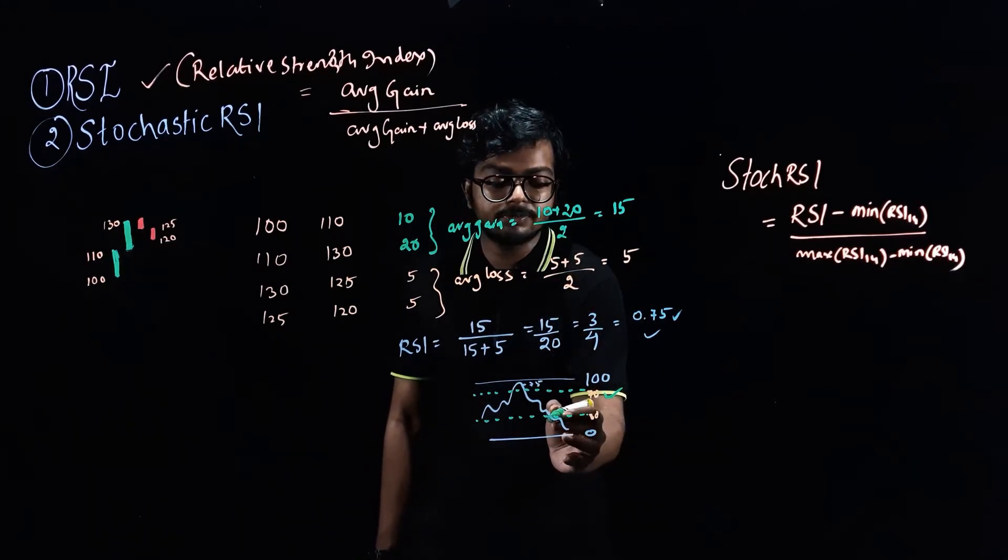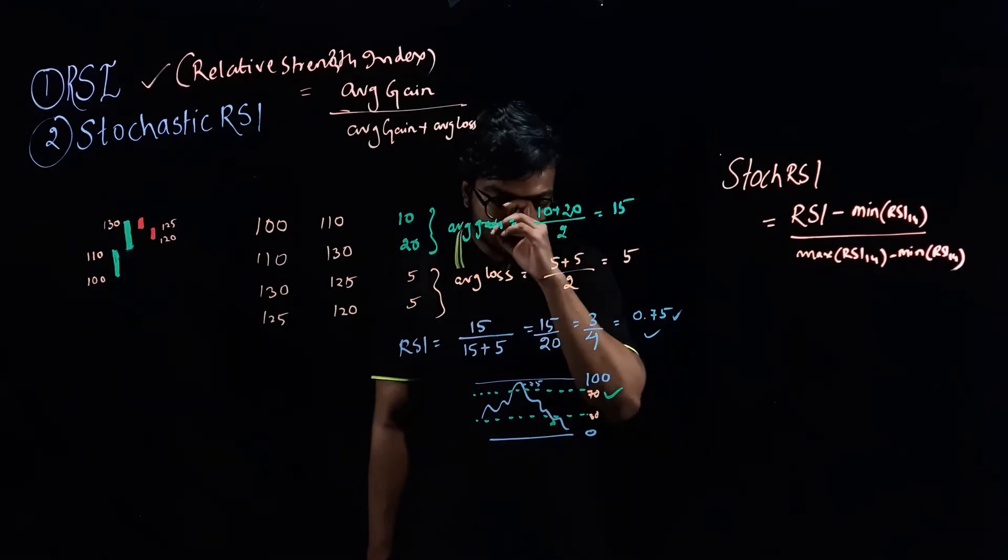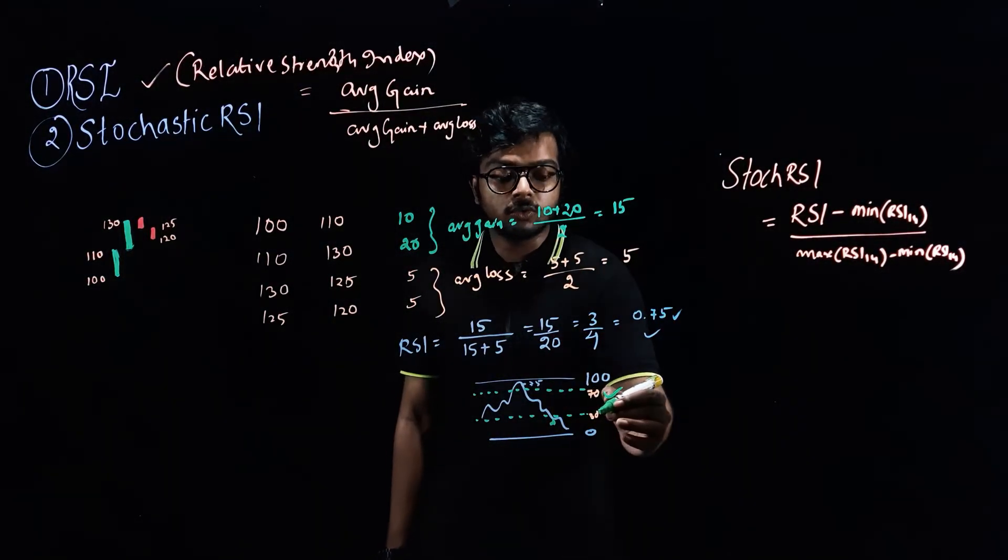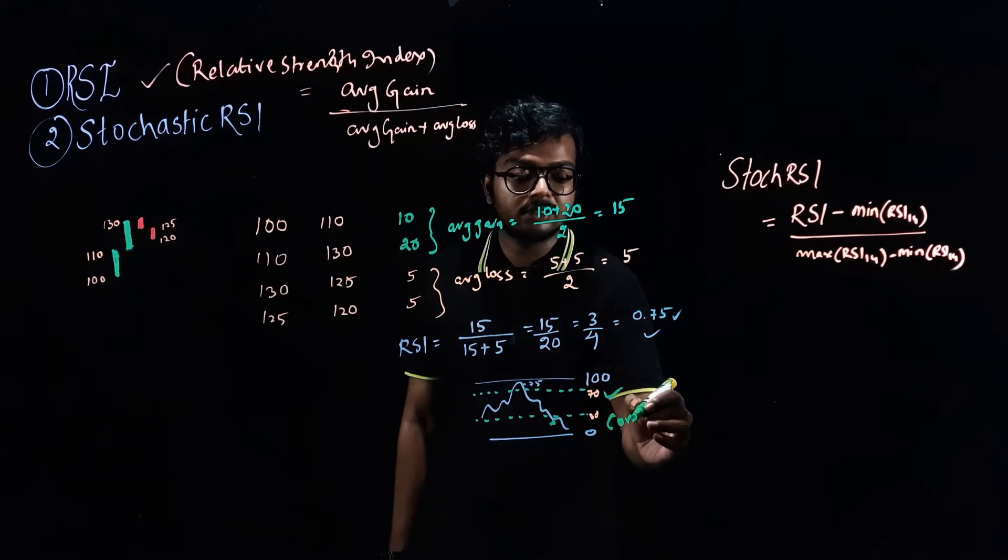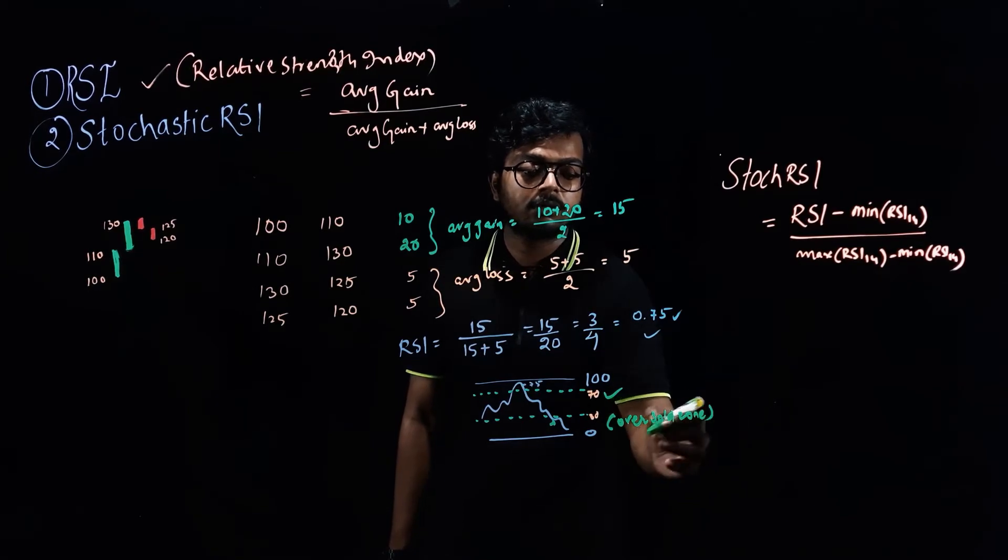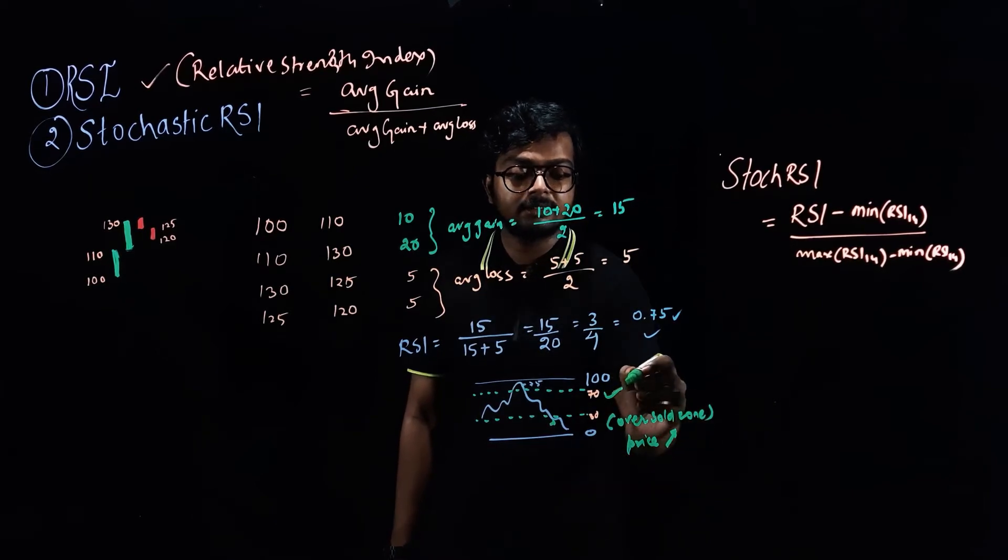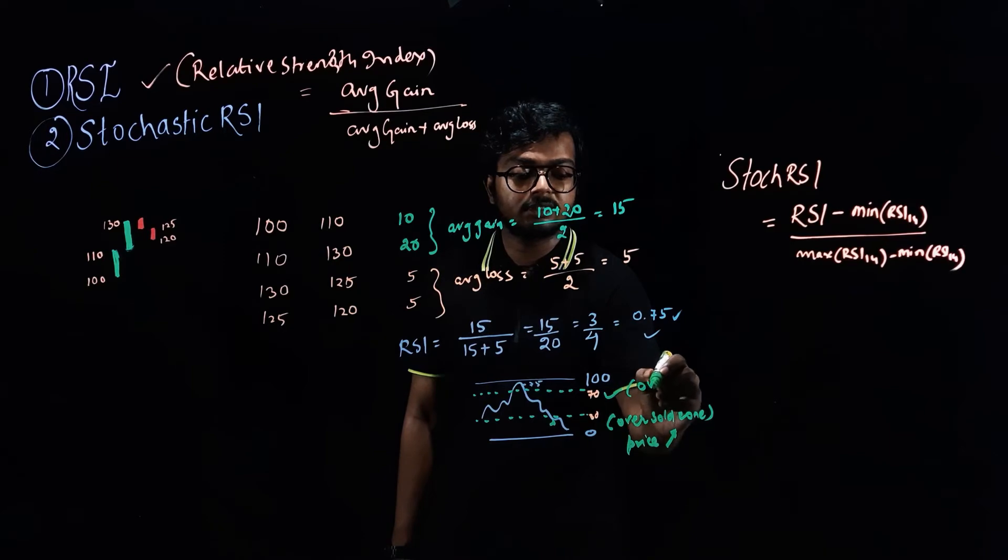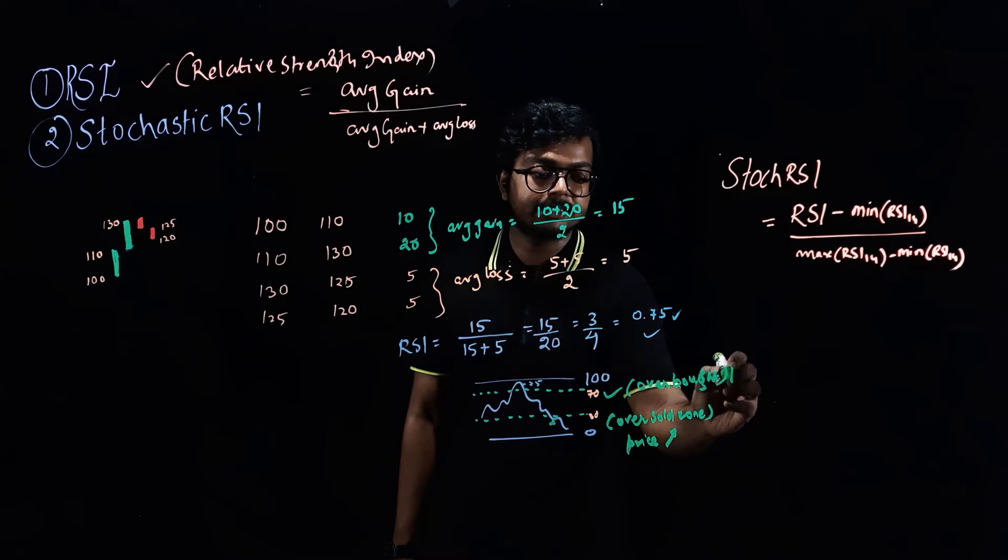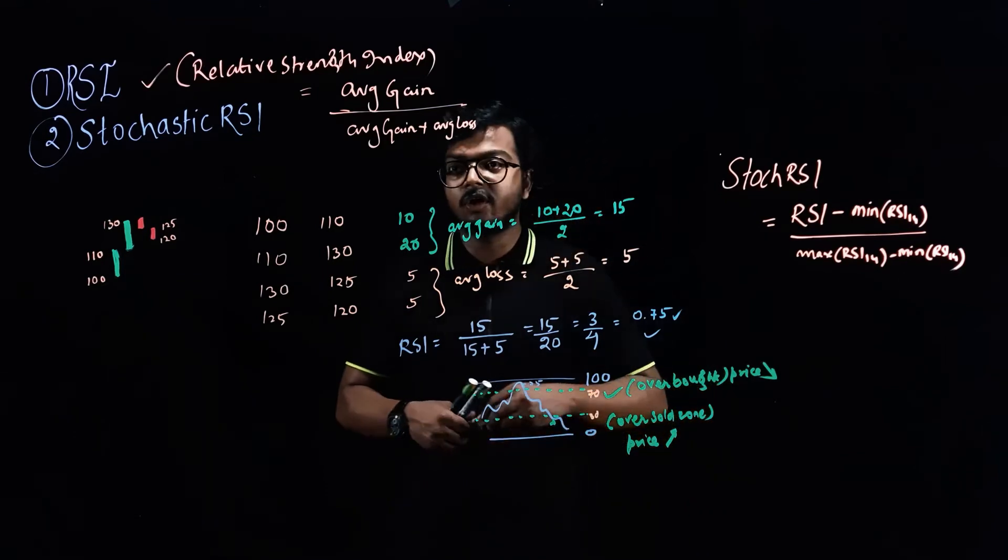Now let us see if RSI falls below 30 level, then this indicates weakness. So that means it is in super weak zone. Now the price may reverse. So RSI below 30 indicates it is in oversold zone. So price might go upwards, and here RSI above 70 is overbought zone, so price might fall down from here. So you should be aware of it.